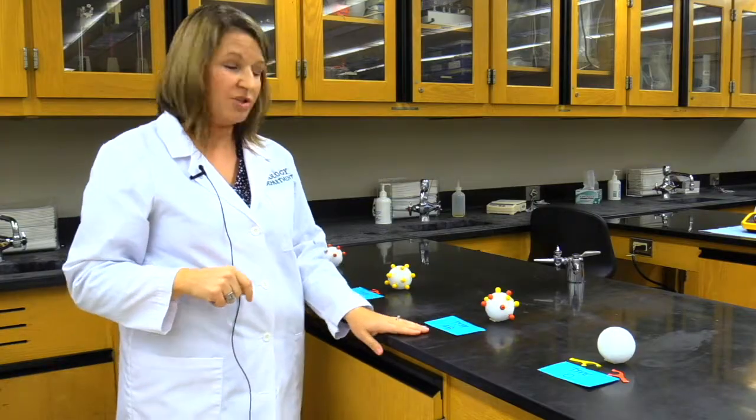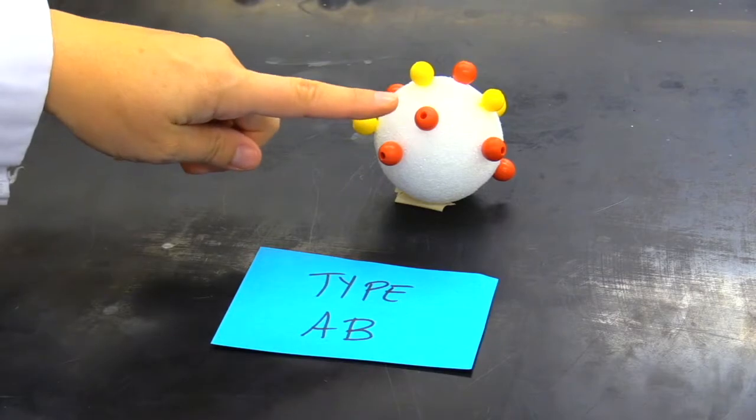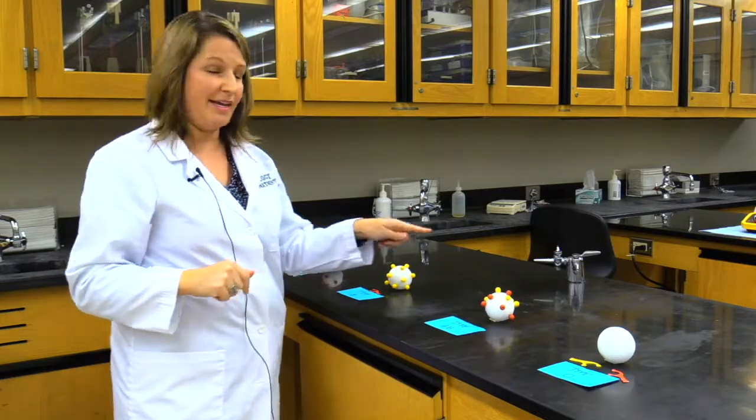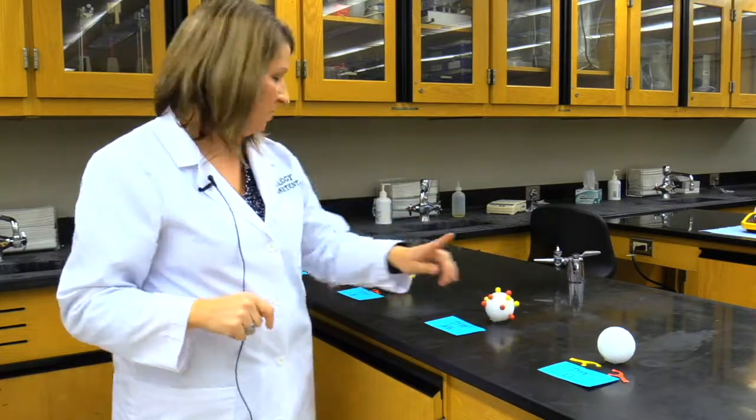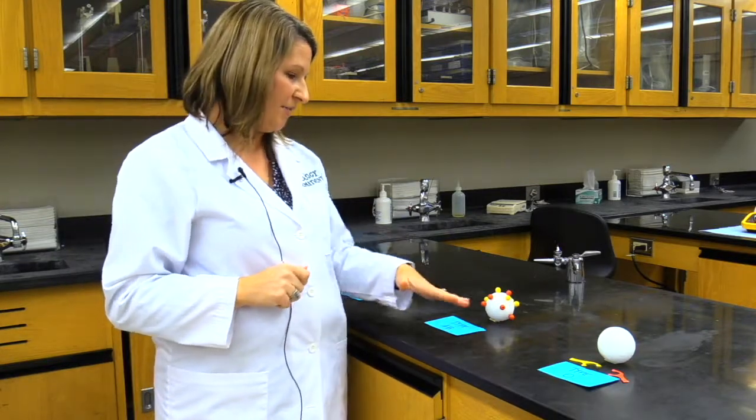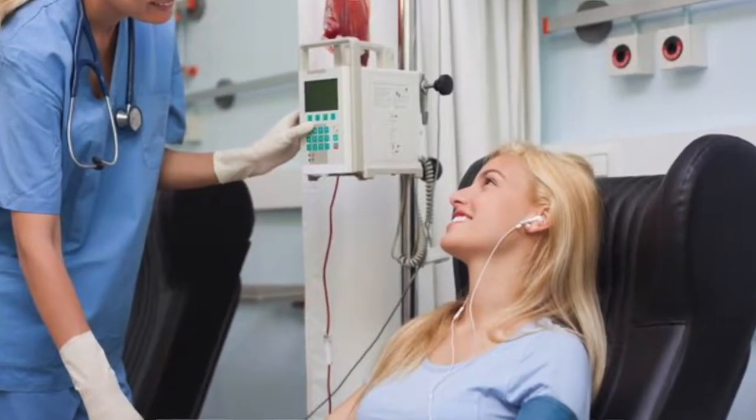The best type of blood type to have, which is actually fairly rare, is type AB. Type AB, because they have both of the antigens, they don't have any of those antibodies. What that means is that they can take blood from anybody. They can take blood from AB, from O, from B or A. So that's a great blood type to have because you can take it from any of these other people. We describe people with type AB as universal acceptors.